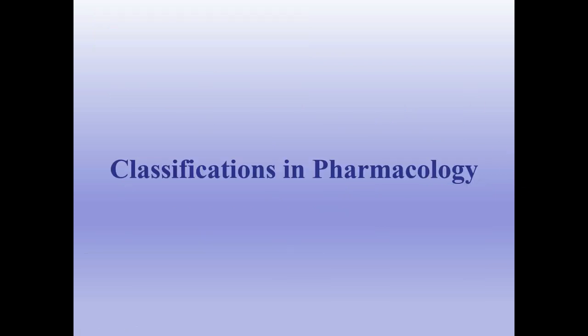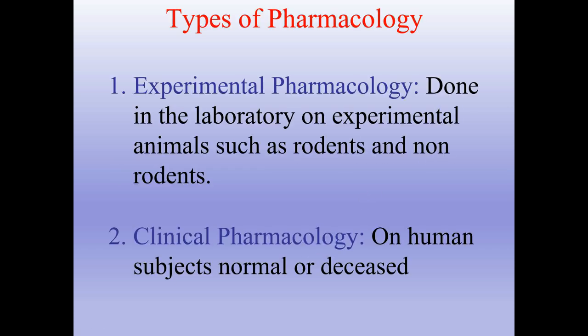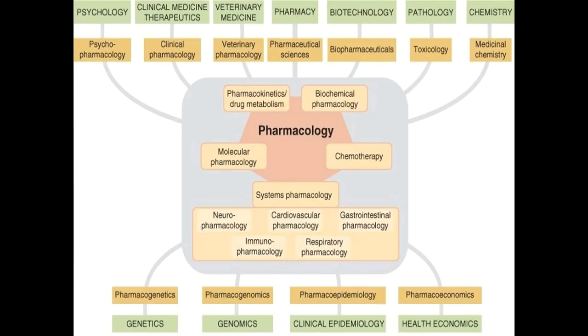The next chapter is classifications in pharmacology. The types of pharmacology are: experimental pharmacology, done in laboratory or experimental animals such as rodents and non-rodents, and clinical pharmacology on human subjects — normal or diseased. Pharmacology is connected with many sciences including psychology, clinical medicine, therapeutics, veterinary medicine, pharmacy, biotechnology, pathology, chemistry, health economics, clinical epidemiology, genomics, and genetics.